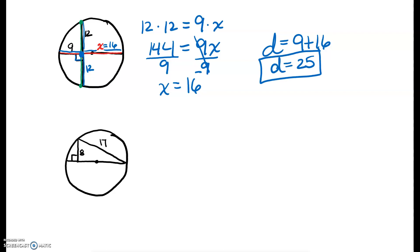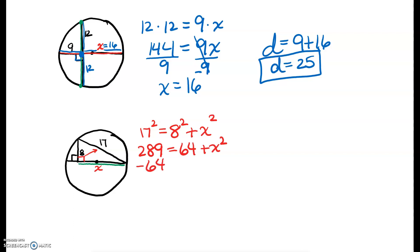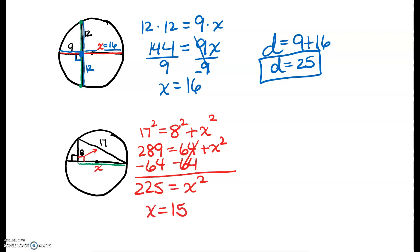We have a very similar problem here. I have a nice right triangle. This side is opposite the right angle — that's the hypotenuse. So 17 squared equals 8 squared plus x squared, where x is part of the diameter. 17 squared is 289 equals 64 plus x squared. Subtracting 64 from both sides, I get 225 equals x squared. Taking the square root of both sides, x equals 15. So that part is 15.